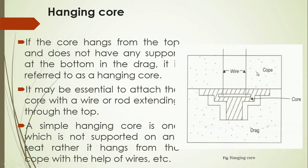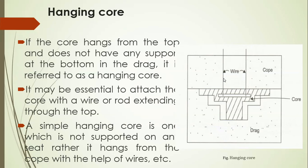Cope means the upper molding part of the flask; drag means the lower molding part of the flask. The molding sand is a mixture of silica sand plus binding material plus water in appropriate proportion. The hatching line is the core and the two wires are used to support this core from the top. It is essential to attach the core with a wire or rod extending through the top. A simple hanging core is one which is not supported on any seat; rather, it hangs from the top with the help of wires.